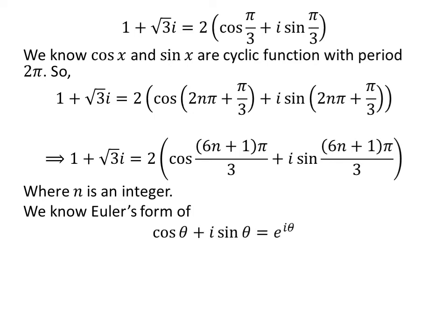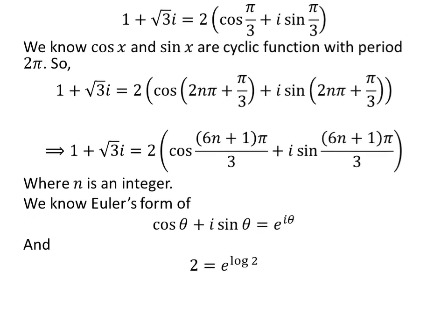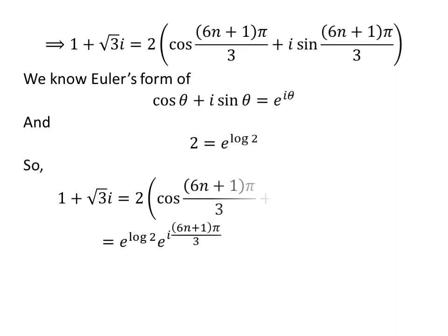We know Euler's form: cosine of theta plus iota times sine of theta is exponential of iota times theta. Also, 2 can be written as exponential of natural log of 2. Taking these two statements into account, we can rewrite 1 plus square root of 3 times iota as exponential of natural log of 2 times exponential of iota times 6n plus 1 times pi upon 3.